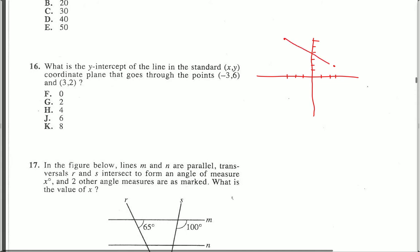Here I have two points, (-3, 6) and (3, 2). The equation of this line, y equals mx plus b form, first needs a slope.